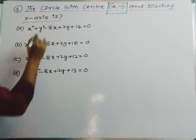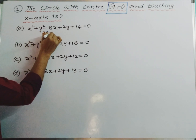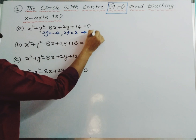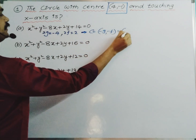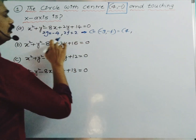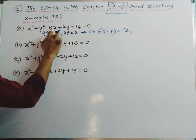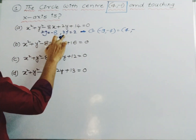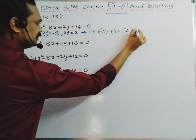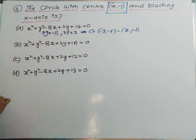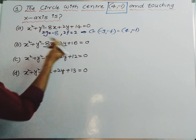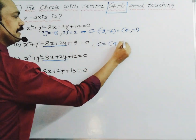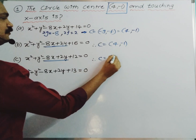Let us check. Here 2g is minus 4 and 2f is 2. So center is (-g, -f), that is (4, -1). Here 2g is minus 8, so g is minus 4, meaning -g is 4. And 2f is 2, so f is 1, meaning -f is minus 1. Center is (4, -1). Here also with minus 8x plus 2y, you get the same center (4, -1).